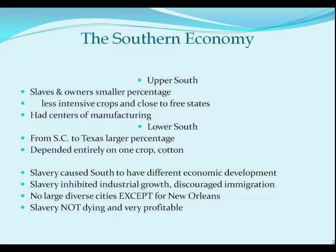While slavery defined and dominated the south's economy, the south was a diverse region. In the upper south — Virginia, Kentucky, Arkansas, Delaware, and Maryland — slaves and slave owners were a much smaller percentage of the population. The deep south stretched from South Carolina all the way west to Texas. The upper south had some manufacturing centers like Nashville, Tennessee and Louisville, Kentucky, while the deep south depended entirely on the one crop: cotton.